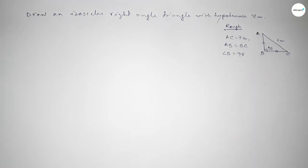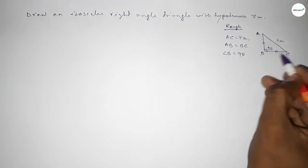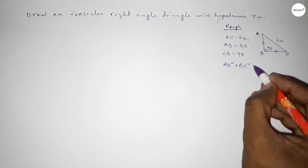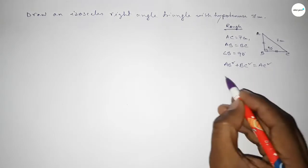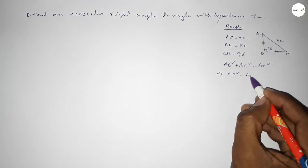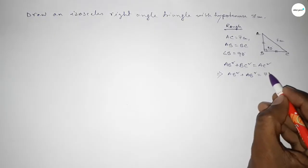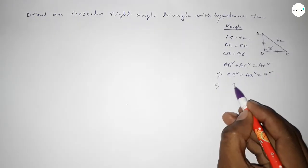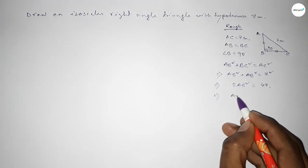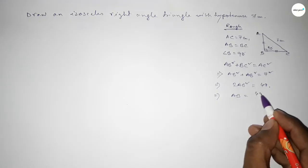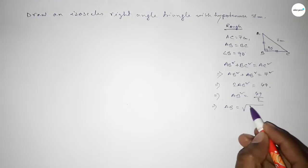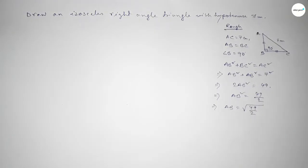By Pythagoras theorem: height squared plus base squared equals hypotenuse squared. So AB squared plus BC squared equals AC squared, which implies AB squared plus BC squared equals 7 squared. Since AB equals BC, this gives 2·AB squared equals 49, so AB squared equals 49 over 2.